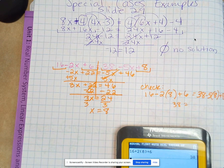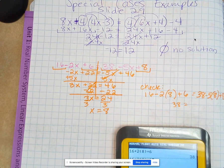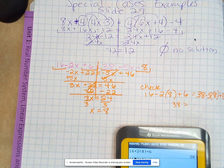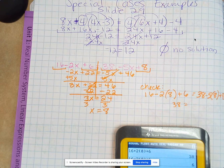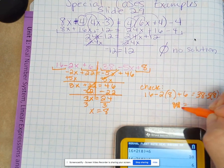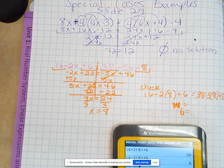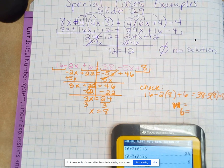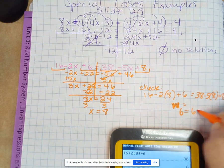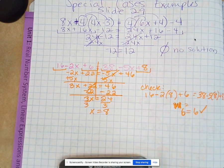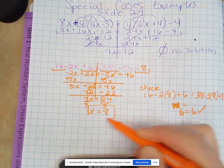So 16 minus 2 times 8 plus 6 is 38. Wait, that's wrong. I should have done minus just here. Okay, there we go. 6 equals, okay, 38 minus 5 times 8 plus 8 is 6. So we did it correctly. x equals 8.